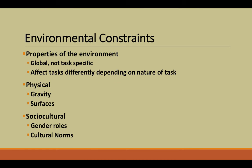The next type is the environmental constraint. These are properties of the environment that are global and not task-specific, and they affect different tasks differently depending on the nature of the task. There are two main categories: physical, which includes gravity and the surface upon which you're performing the task; and socio-cultural, which includes gender norms and cultural norms. For example, a running gait on a wet surface will be different compared to a dry, sunny day because the surface is different.